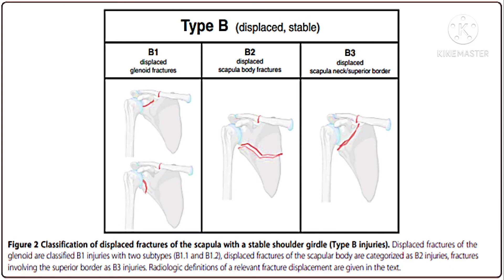Type B classification covers displaced fractures of the scapula with a stable shoulder girdle. All Type B displaced fractures of the glenoid are classified as B1 injury with two subtypes B1 and B2. Displaced fractures of the scapular body are categorized as B2 injury. Fractures involving the superior body are B3 injury. Radiological definitions of relevant fracture displacement are given in the next section.